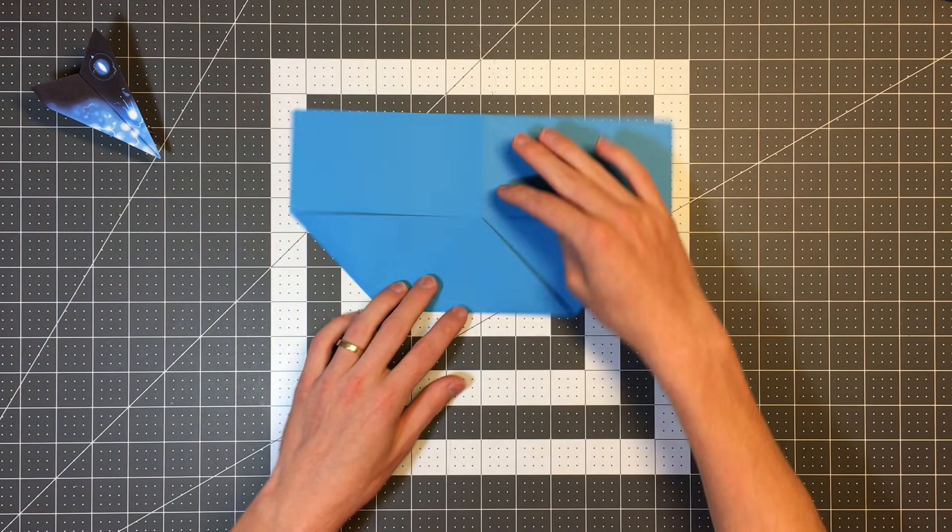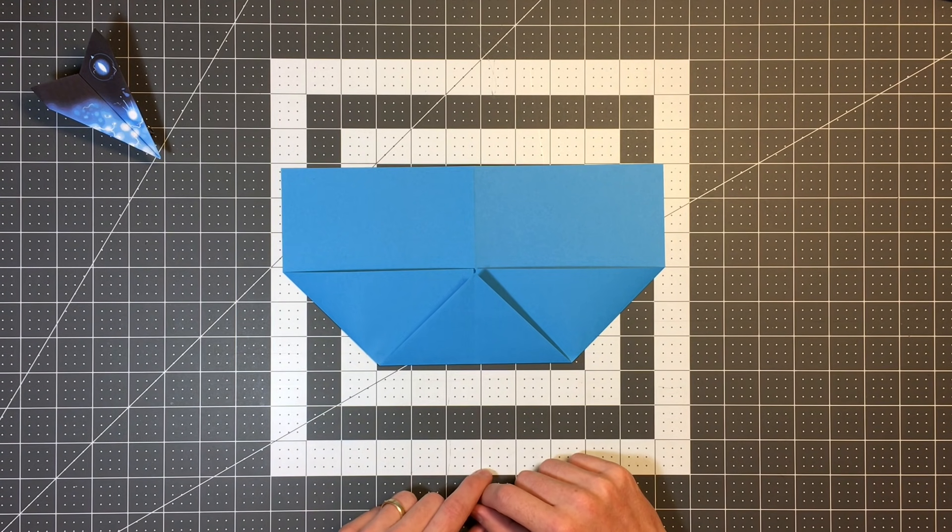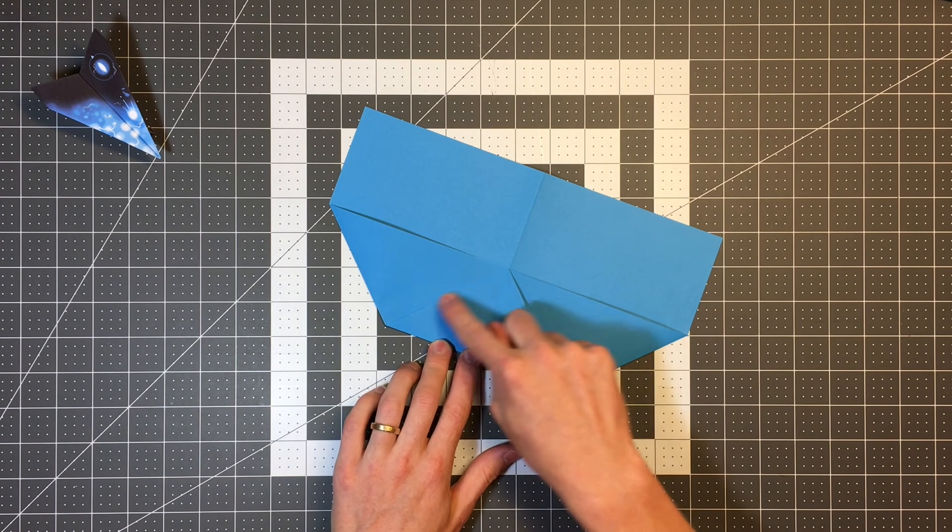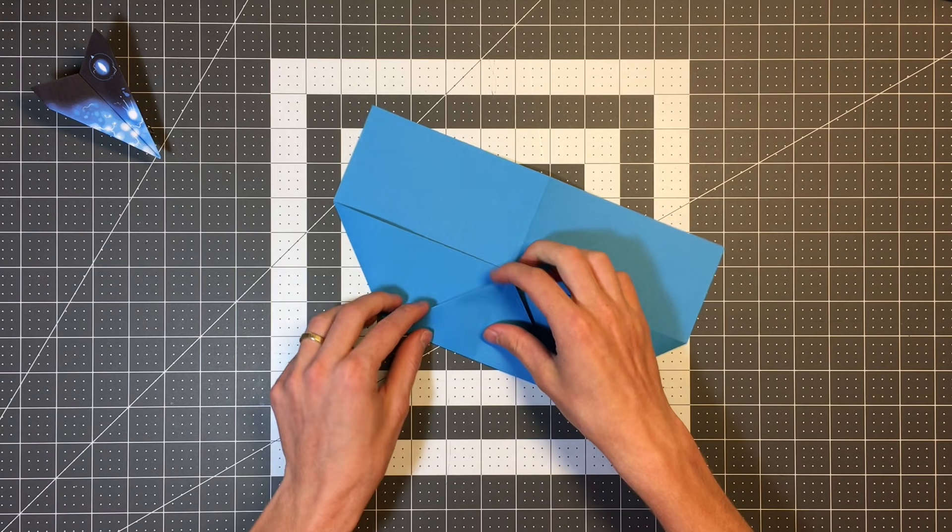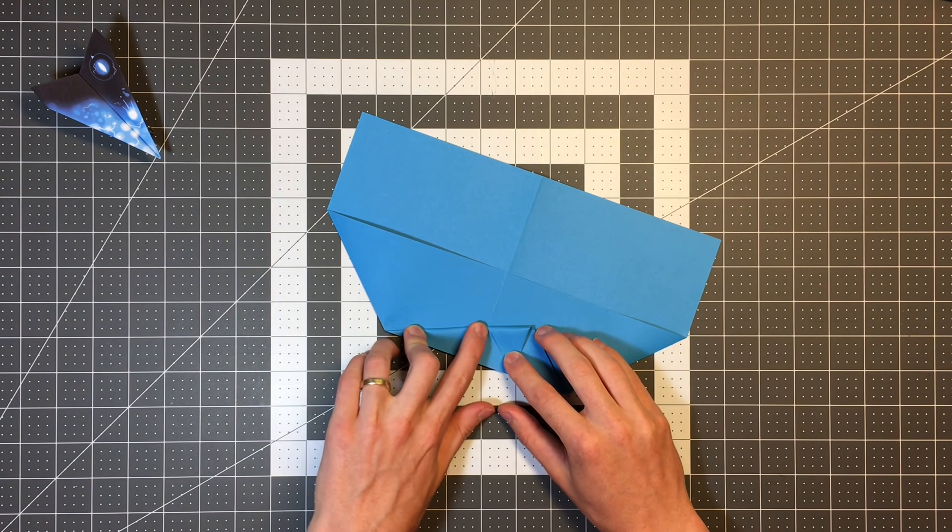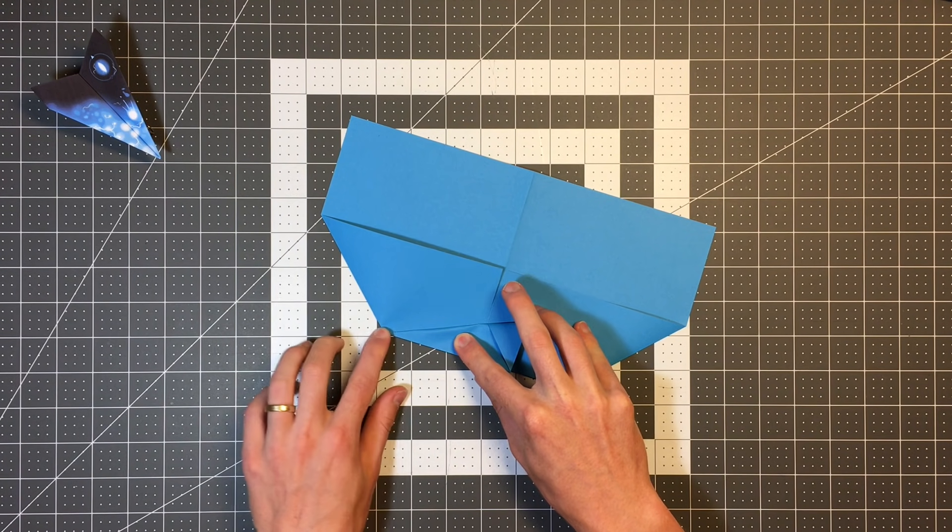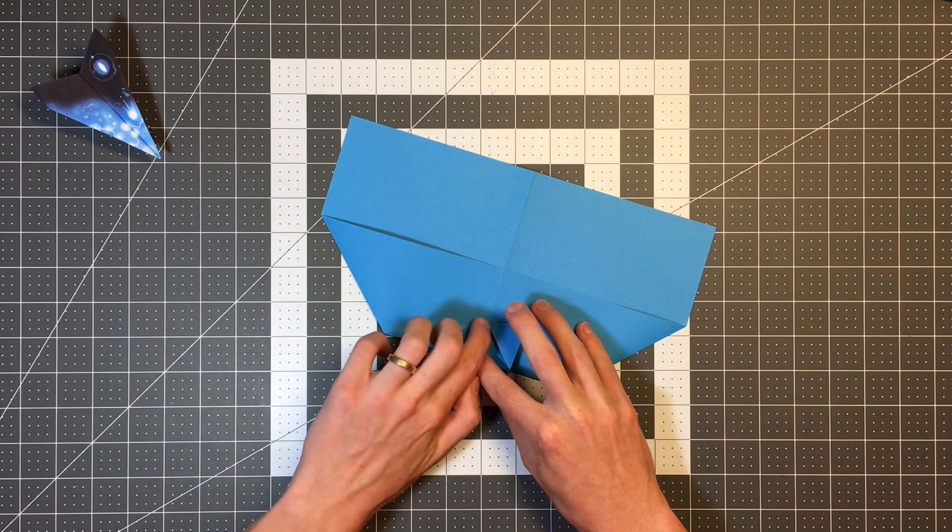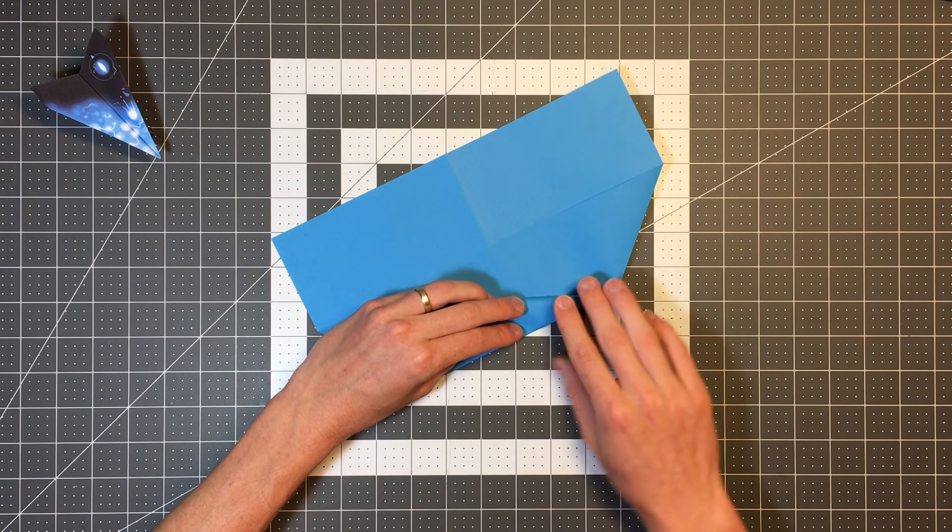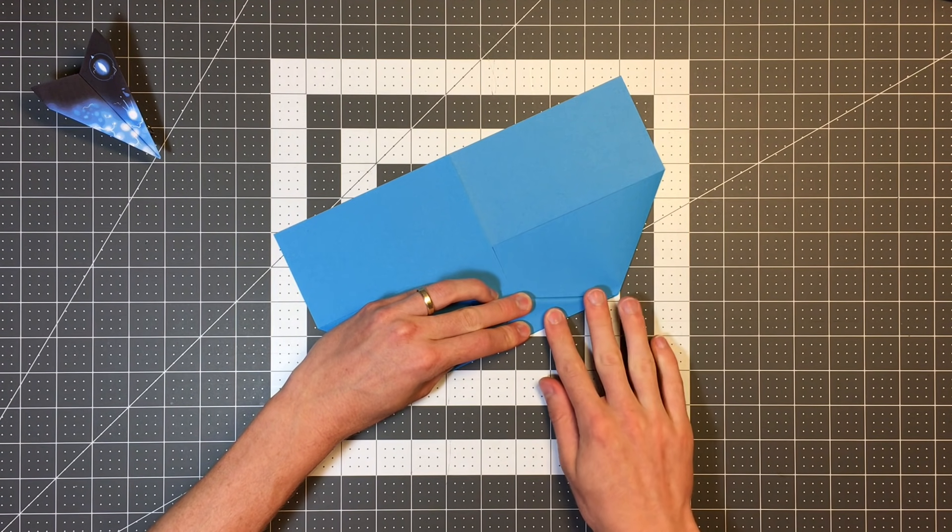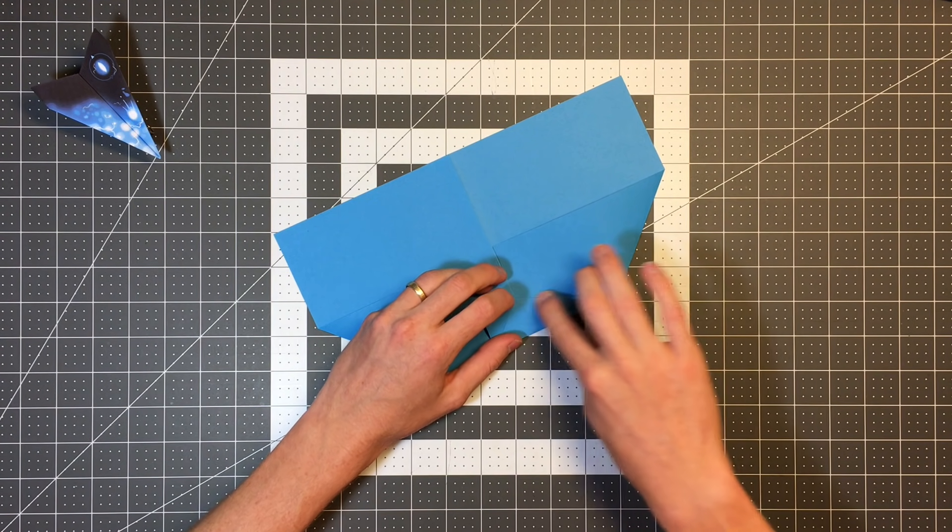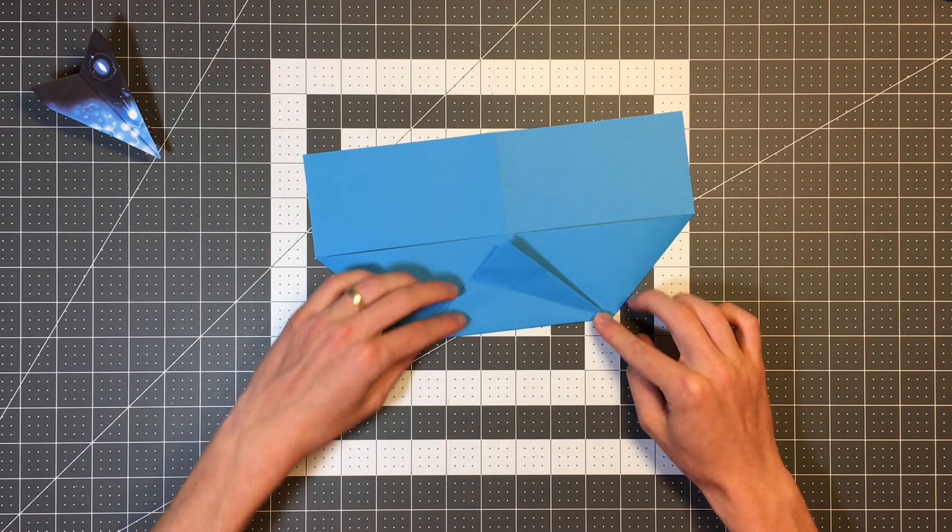Next I just want to rotate it and look at it from this orientation. What we're doing next are making some reference creases for a future fold. I want to take this edge here and fold it to this edge here. I'm just going to crease to where it intersects this center point there. If you crease beyond that, it's not a big deal. We'll do the same thing on the other side. And we'll open that up.